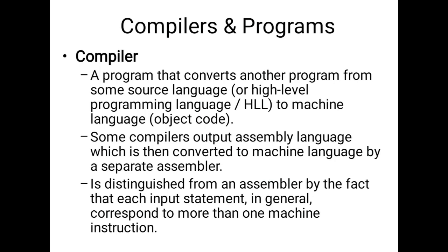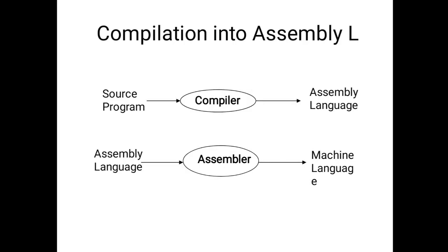We write programs using alphabet letters and the compiler converts them to machine code. Some compilers output assembly language, which is then converted to machine language by a separate assembler. The source program written in any programming language is taken by the compiler, converted to assembly language, and then the assembler converts it to machine code. So machine code is simply the conversion of English letters to zeros and ones, and the assembler handles converting to machine-dependent codes.